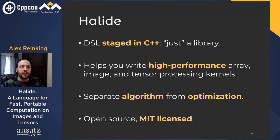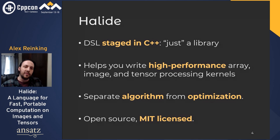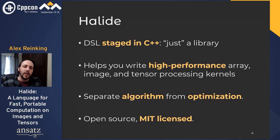That brings us to Halide, the subject of today's talk. Halide is a hybrid of the internal and external DSL approaches. It's embedded in C++, so in that sense it's just a library like Eigen. But it executes code by JITting or by producing C-ABI compatible object files, so in that sense it's more external. The problem it helps you solve is optimizing dense numerical kernels like those found in image processing, computer vision, machine learning, and artificial intelligence.